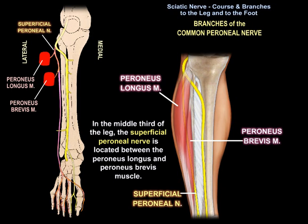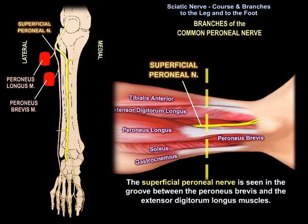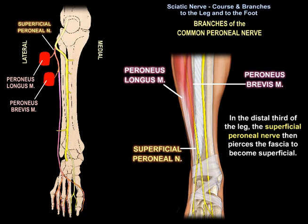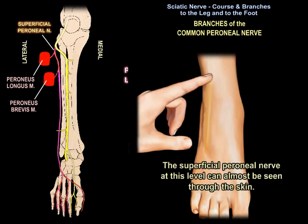In the middle third of the leg, the nerve is located between the perineus longus and perineus brevis, then is seen in the groove between the perineus brevis and the extensor digitorum longus. In the distal third of the leg, the superficial perineal nerve pierces the fascia to become superficial, and at this level it can be seen through the skin.